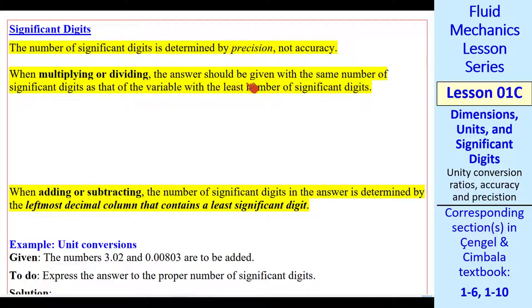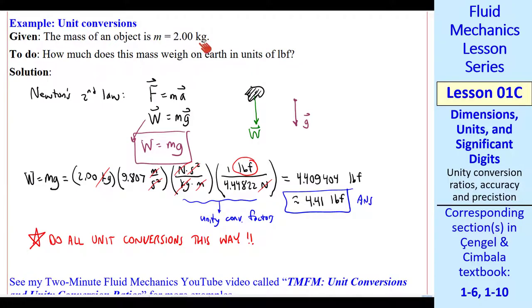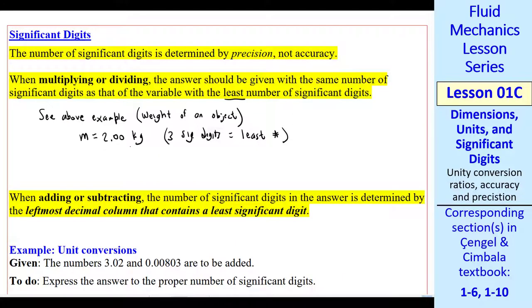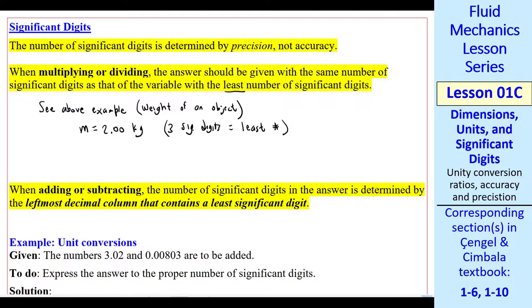The first one's a lot easier. The answer is given with the same number of significant digits as that of the variable with the least number of significant digits. I refer you to the example I did earlier. The mass is given to three significant digits. G is given to four significant digits. So the variable with the least number of significant digits is the mass, namely three significant digits. That's why we give our final answer to three significant digits. I summarize by saying that mass has three significant digits, which is the least number of significant digits in the problem. If you multiply several variables together, find the one with the least number of significant digits, and state your answer in that same number of significant digits.